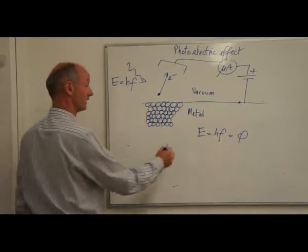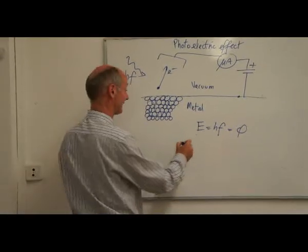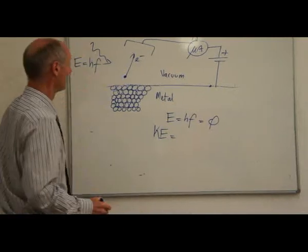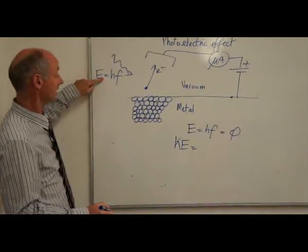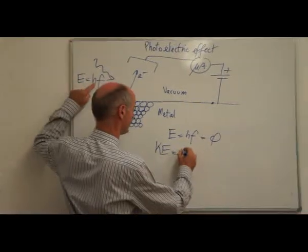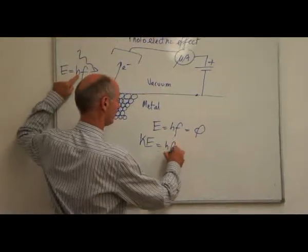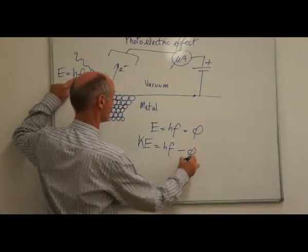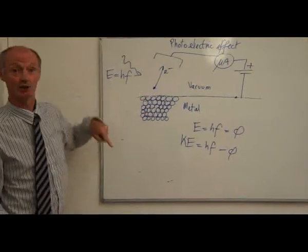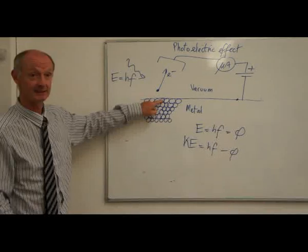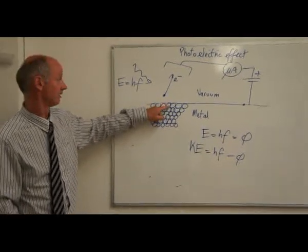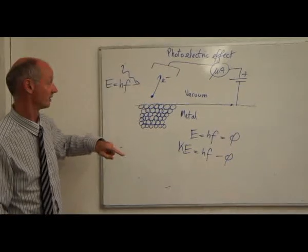There are tricks for measuring the kinetic energy of the electrons. The kinetic energy of the electrons is given by the total energy delivered by the photons arriving, hf, minus the work function. The work function is the amount of energy required to get the electron out of the surface — to liberate it from its orbit around an atom buried in the surface.